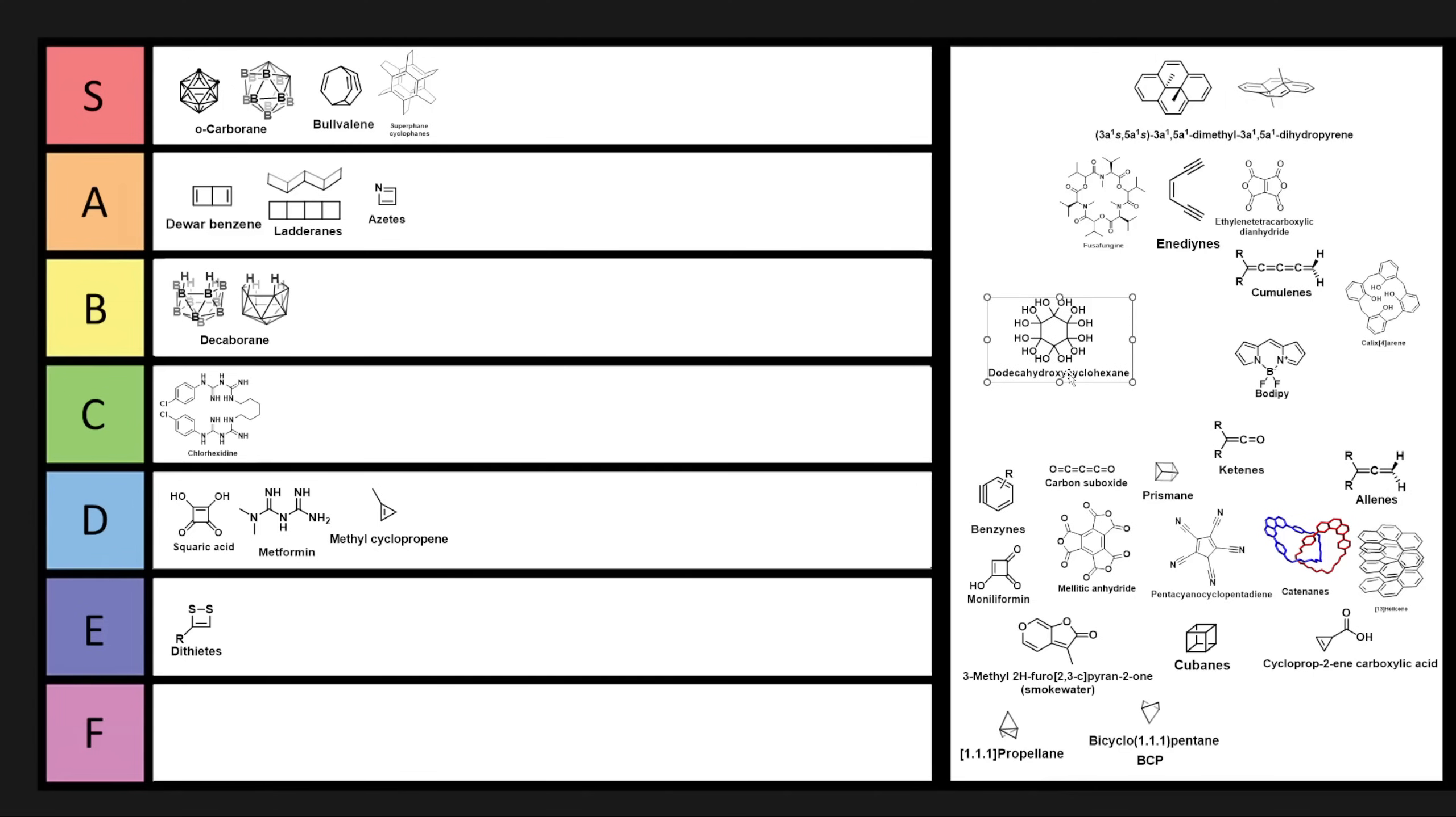Now, one that is definitely cursed is dodecahydroxycyclohexane. So if you were to just take cyclohexane and put a ketone on every single position, it will just totally hydrate to this gemdiol on every single ketone. So this is definitely a relatively cursed molecule. I immediately would wonder what this tastes like because it looks like it would be pretty sweet as well as pretty unstable. So I'm going to put this in B-tier.